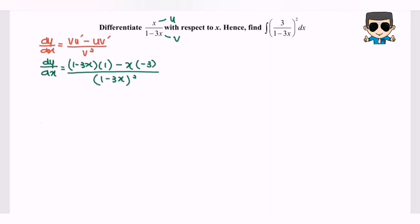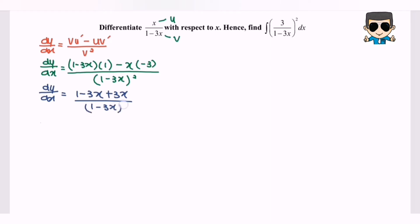So if we simplify the expression, dy/dx is equal to 1 minus 3x plus 3x over 1 minus 3x to the power of 2. Finally, dy/dx is equal to 1 over 1 minus 3x to the power of 2.